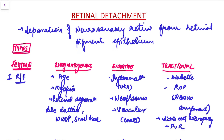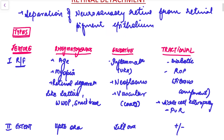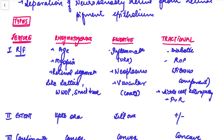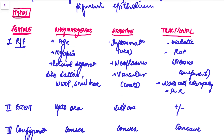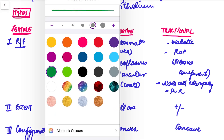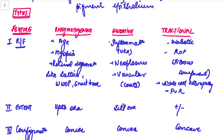There are three types of retinal detachment. First is rhegmatogenous, second is exudative, and third is tractional. For rhegmatogenous retinal detachment, the risk factors are age, myopia, and retinal degeneration. For exudative retinal detachment, inflammation is mainly considered the risk factor. For tractional retinal detachment, it mainly occurs in diabetic people, in retinopathy of prematurity, sickle cell retinopathy, and in PVR.